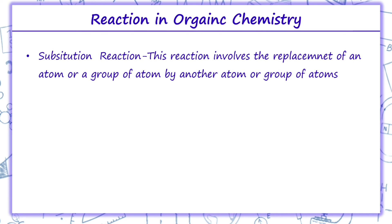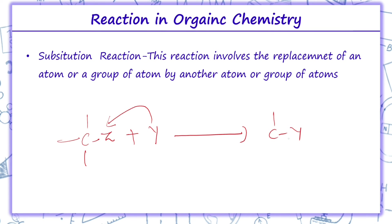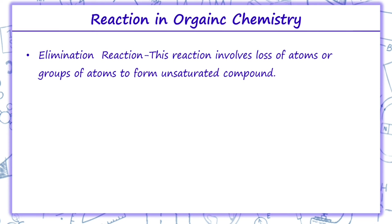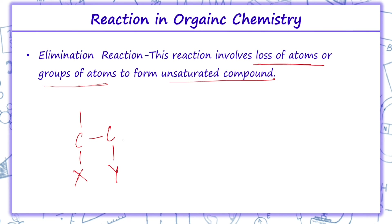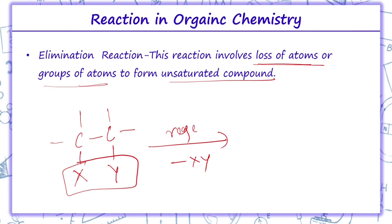Substitution involves the replacement of an atom or group of atoms by another atom or group of atoms. For example, if Z is attached to a compound and it is reacted with Y, then Y replaces Z — this is a substitution reaction. Elimination reaction involves the loss of an atom or group of atoms to form unsaturated compounds. For example, if X and Y are attached on adjacent carbons, removal of XY in the presence of a reagent produces a double bond, giving alkene or alkyne compounds.